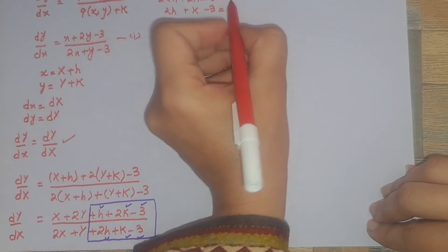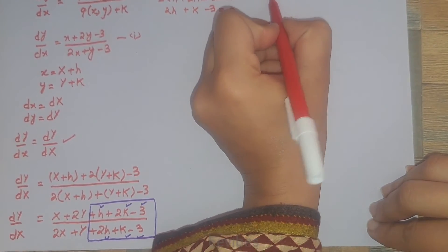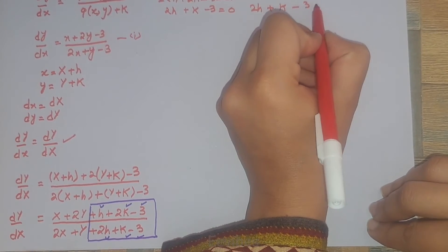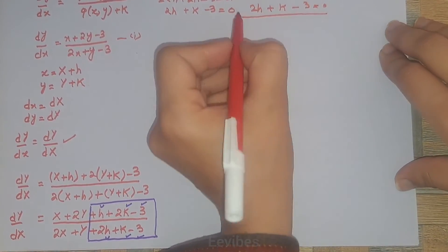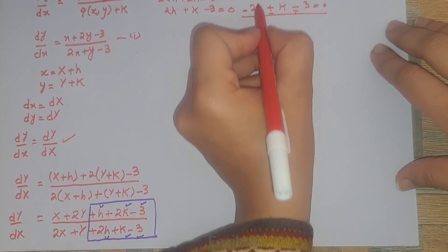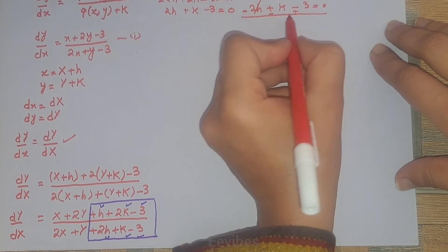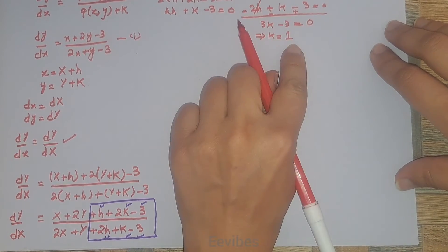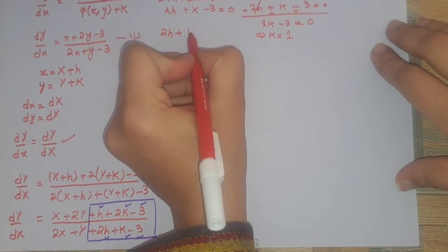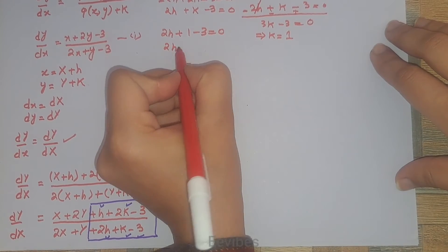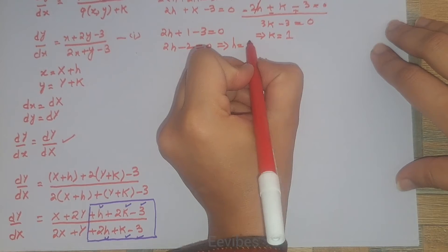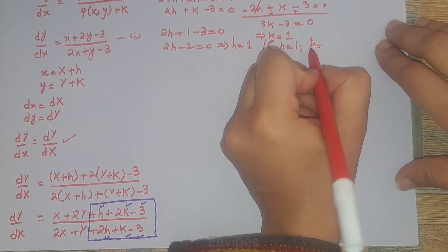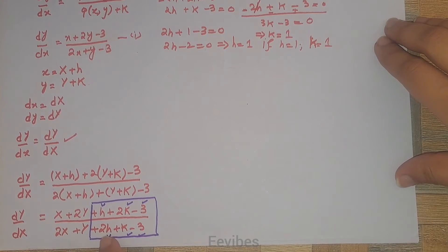Multiplying the first equation by 2 gives 2h + 4k − 6 = 0, while the second equation remains 2h + k − 3 = 0. Subtracting the second from the first: 3k − 3 = 0, so k = 1. Substituting k = 1 into the second equation: 2h + 1 − 3 = 0, giving 2h − 2 = 0, so h = 1.